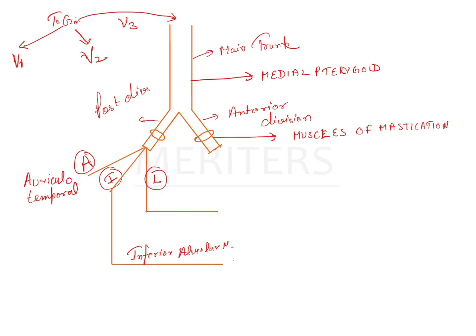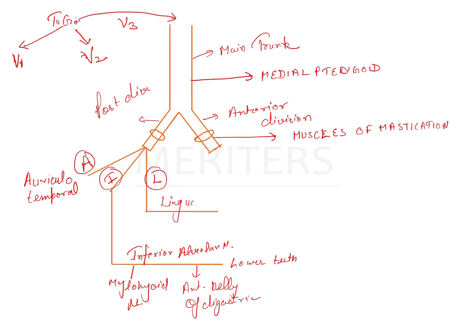The inferior alveolar nerve is going to supply the lower teeth. From the inferior alveolar nerve you can have other nerves — that is the mylohyoid nerve, which will be coming as a branch of this particular nerve. And there will be the anterior belly of the digastric, which will be supplied from the inferior alveolar nerve. And L here stands for your lingual nerve.